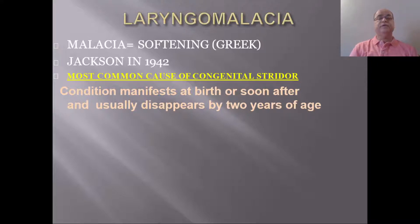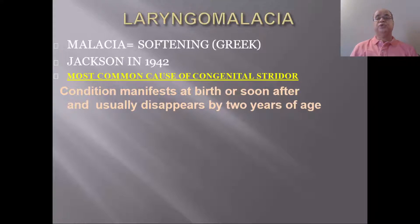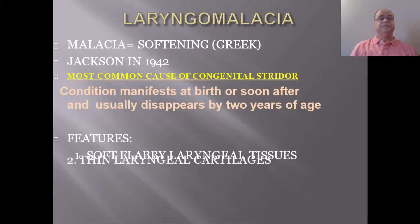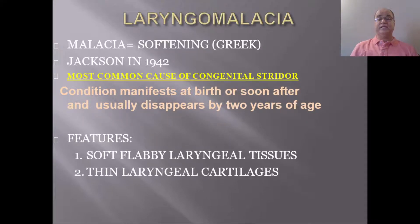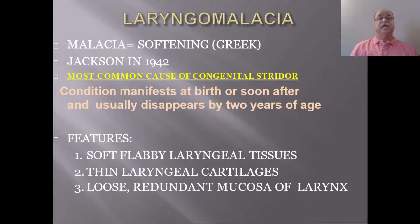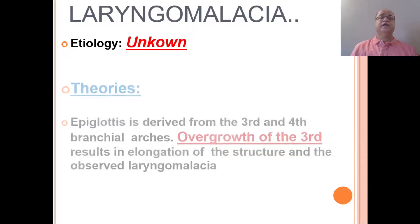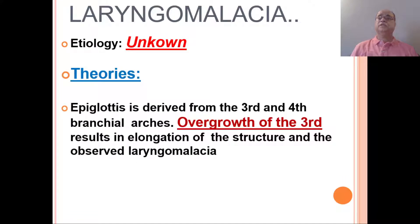This condition manifests at birth or soon after and usually disappears by two years of age, so there is a natural resolution of the disease. There are soft, flabby laryngeal tissues, thin laryngeal cartilages, and loose redundant mucosa of the larynx. Its exact etiology is unknown, but there are certain theories.